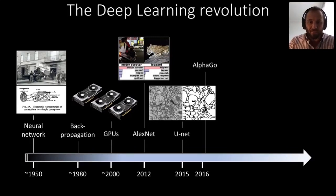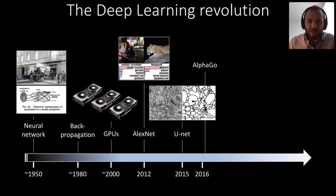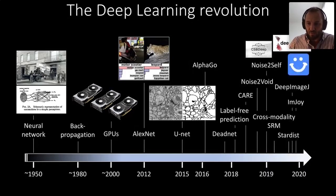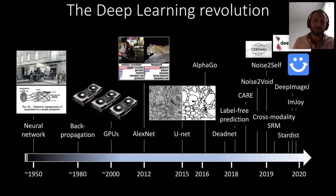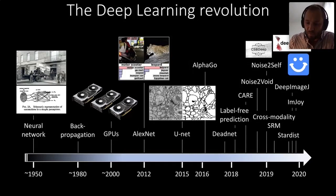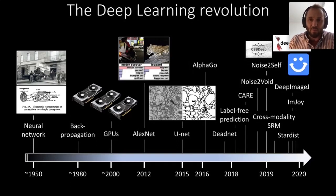A little later, AlphaGo made it clear that deep learning was here to stay and would change the way we do everything. From 2018 up to today, there's been huge development in new architectures, new tasks, new networks, new frameworks, and new compatibilities with classical bioimage analysis — a really huge uptake from the community.